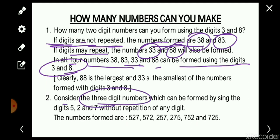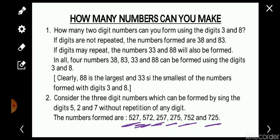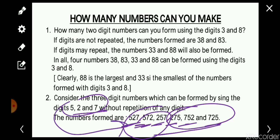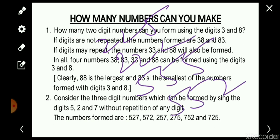Consider 3-digit numbers formed using digits 5, 2, and 7 without repetition: 527, 572, 257, 275, 752, 725 — total 6 numbers can be formed. If repetition is allowed, many more numbers can be formed, such as 225, 222, 555, 552, and many others.